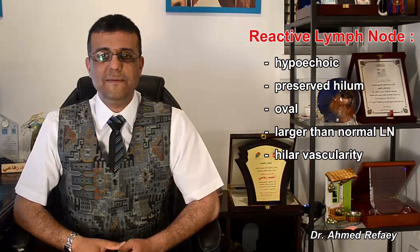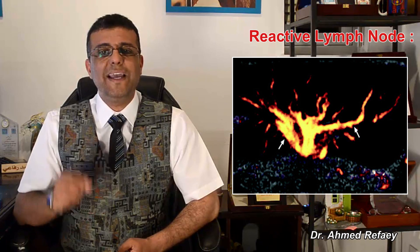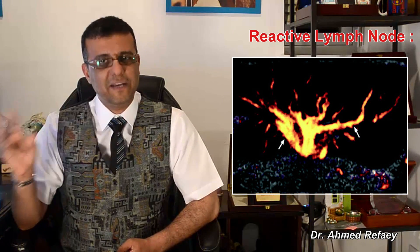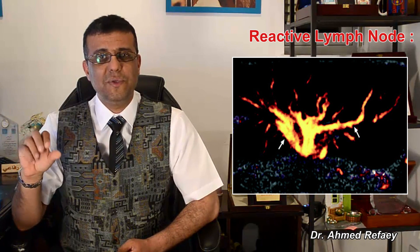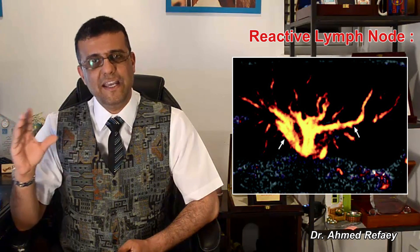On color Doppler study, reactive lymph nodes predominantly show hilar vascularity, unlike normal lymph nodes where hilar vascularity may or may not be found. On spectral Doppler ultrasound, they also show low vascular resistance — as seen in this image, the resistive index is 0.59 and the pulsatility index is 0.94.